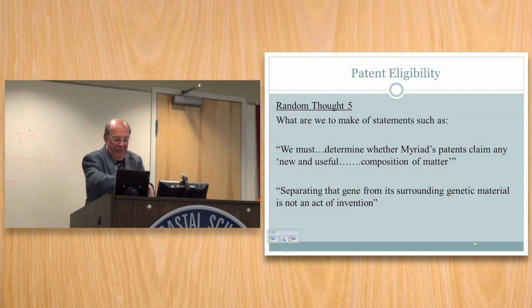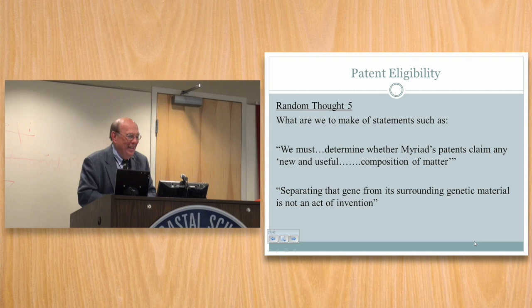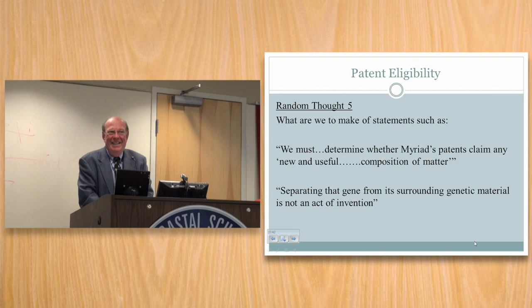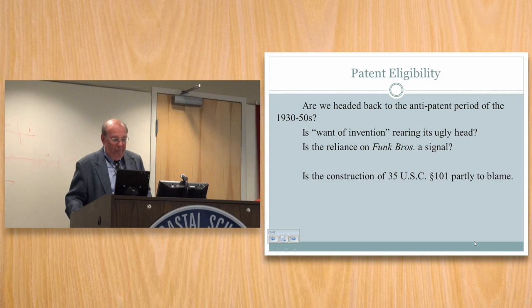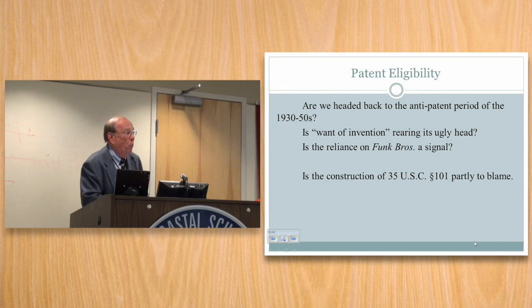Random thought number five. What are we to make of statements like: 'We must determine whether Myriad's patent claims any new and useful composition of matter'? And: 'Separating a gene from its surrounding genetic material — not an act of invention.' Are we heading back, as Jeff suggested, to the 1930s through 1950s? The phrase used in many of those cases was 'want of invention.' Are we resurrecting that ugly head?